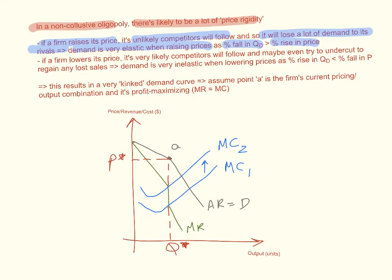At the same time, if a firm lowers its price, it is very likely that competitors will follow and maybe even try to undercut this firm's price to regain any lost sales. So demand becomes very inelastic when lowering prices because the percentage rise in quantity demanded will always be less than the percentage fall in price. This results in a very kinked demand curve.